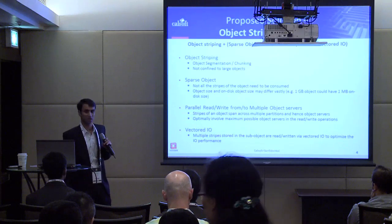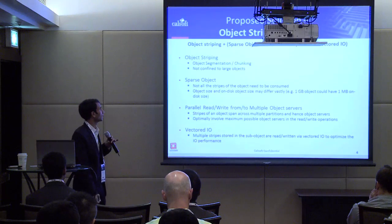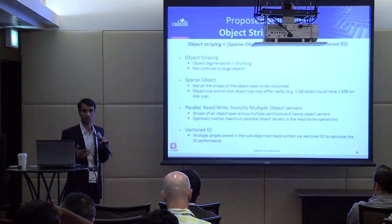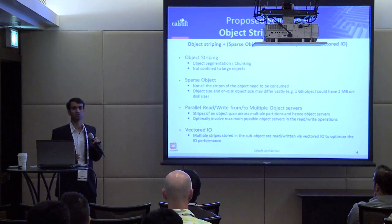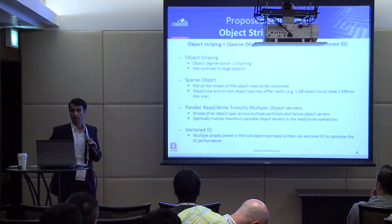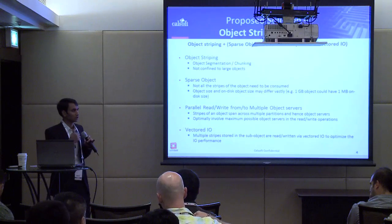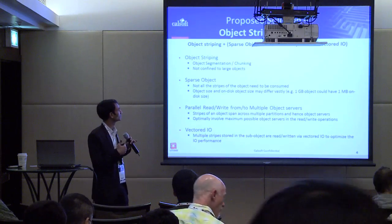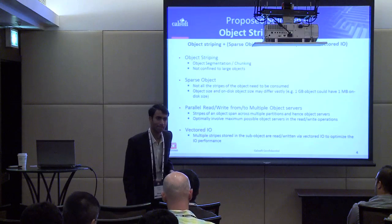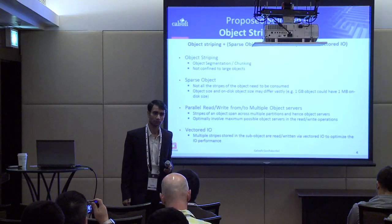Object striping is not much different from today's segmentation or chunking, but the most important thing is it is not confined to only large objects. As the object size increases, you'll see more and more stripes — you treat all objects similarly. An audience member asks: is there a way to improve segmentation in Swift, and how does this compare to erasure encoding?